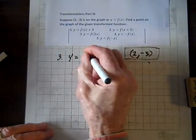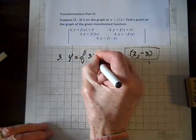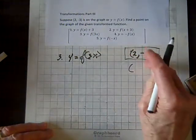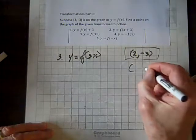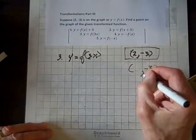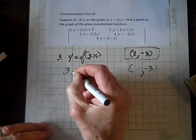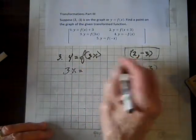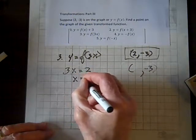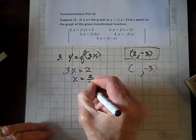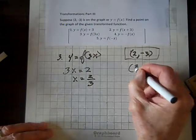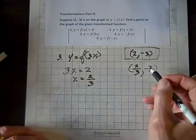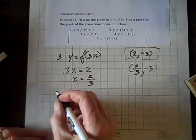For 3, y equals f of 3x. There's going to be no change in the y coordinate, but we'll set, there will be a change in x, so we set 3x equal to, the x coordinate is 2, and we solve for x, x equals 2 over 3. So, our new ordered pair relative to the transformation is 2 thirds, and the y coordinate is negative 3.